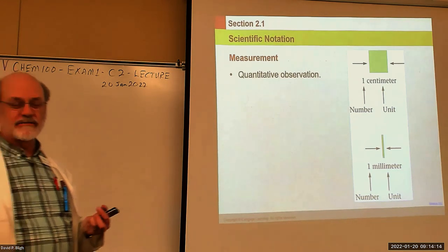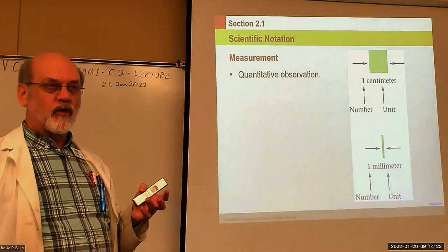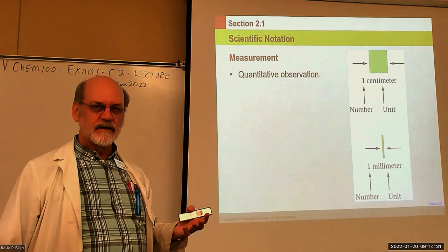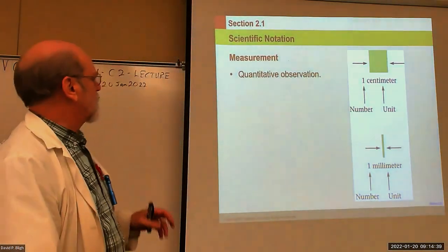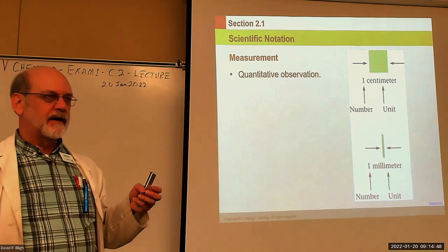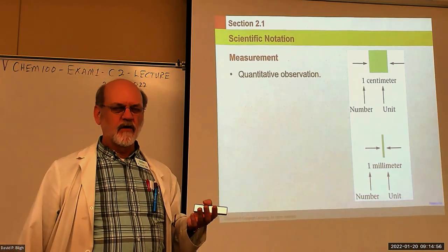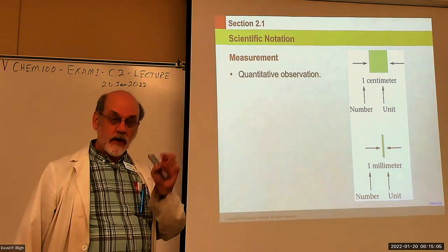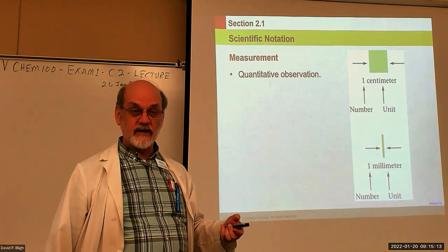This is known as a quantitative observation. When you make an observation about some phenomenon in nature, it could be quantitative — meaning you have a number and a unit — or it could be qualitative. A qualitative observation is more descriptive; for instance, we might say what color something is, or that it's bigger than something else, or that it feels hot. We can use a thermometer to turn that qualitative observation into a quantitative one by measuring the temperature.